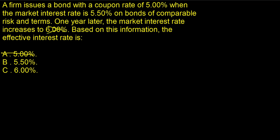We issued the bonds when the market rate was 5.5%. That is the effective interest rate — that is what matters. So the correct answer is B.